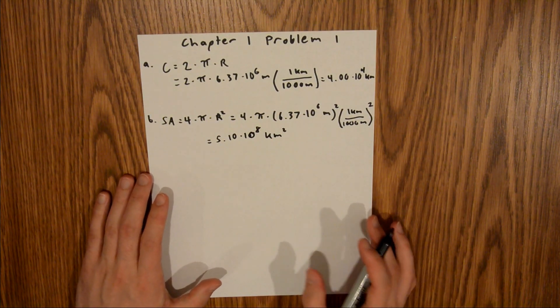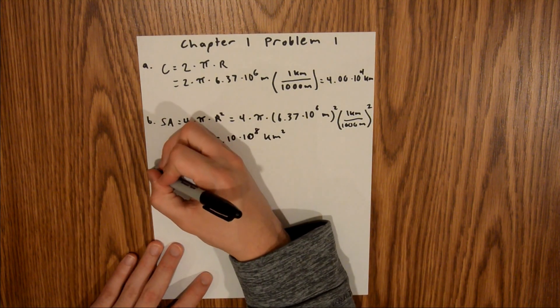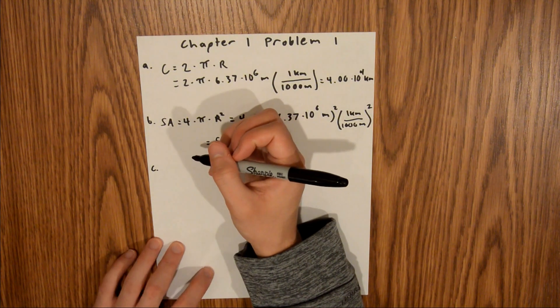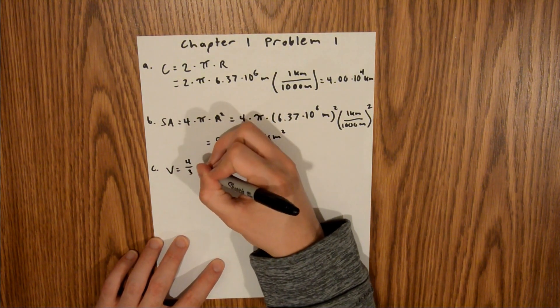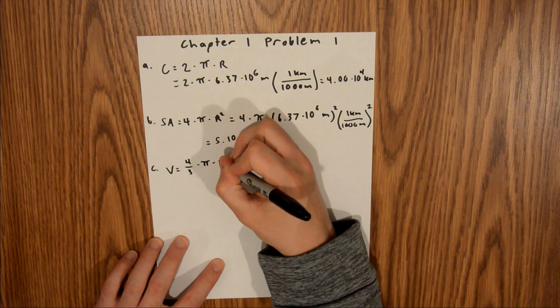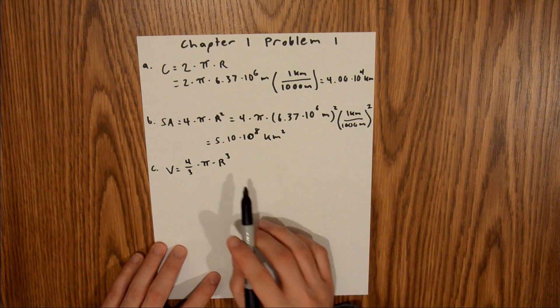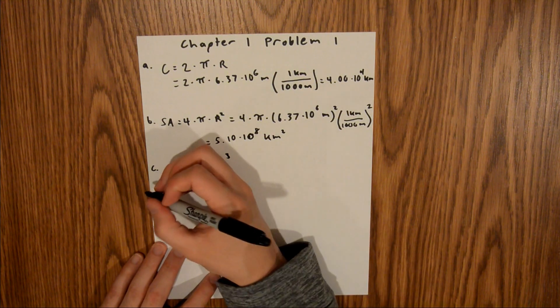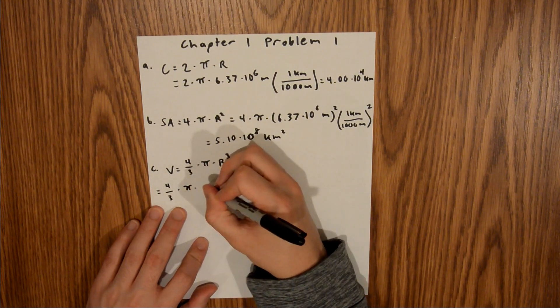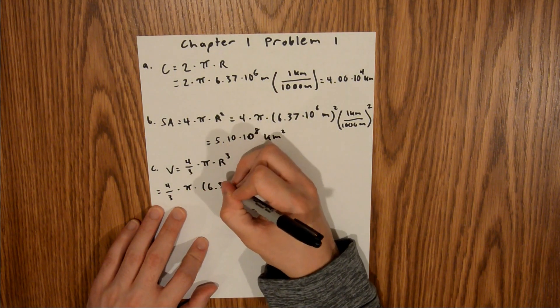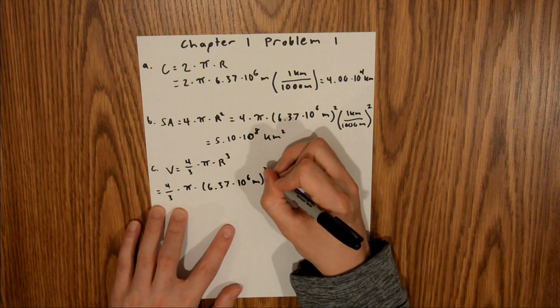And so now that's it for Part B, and then if we move on to Part C, we are asked to find the volume of Earth, and so the volume of a sphere is equal to 4 3rds times pi times r cubed. And so again, we just need to plug in the radius. And so this is going to be equal to 4 3rds times pi times 6.37 times 10 to the 6th meters cubed.